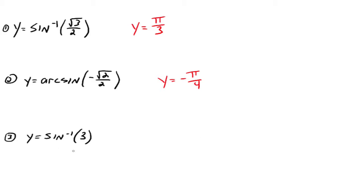What about y equals the arc sine of 3? We're looking for some number between negative pi over 2 and pi over 2 whose sine is 3. Well, there are no real numbers whose sine is 3, because sine goes between 1 and negative 1. So this does not exist using real numbers. If you get into complex numbers and imaginary numbers, then yes, you can find those — but right now we're sticking with real numbers.